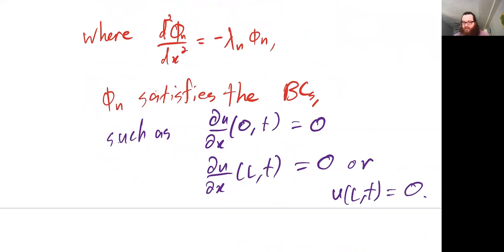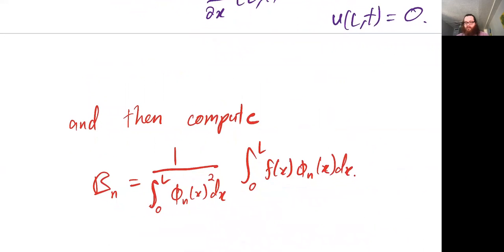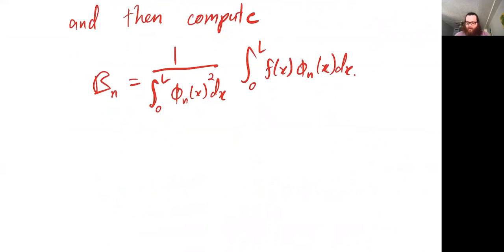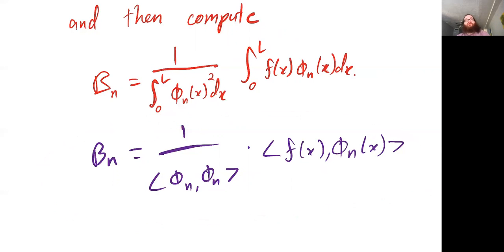Once we know what these phi sub N are — once we compute the solutions to this ODE — then we can figure out what these B sub N are by essentially the same manner. One way we can write this is one over the norm of phi sub N squared times the projection of f(x) onto phi sub N of x, and that's going to be B sub N. Writing it in this form is the linear algebraic formulation, while writing it out explicitly is more computational.